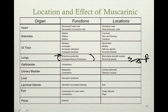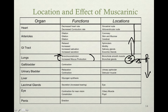Giving Atrovent — a parasympatholytic or anticholinergic — blocks parasympathetic tone and leaves sympathetic dominance. In addition, giving a beta-2 agonist, which targets a sympathetic receptor, gives even more benefit — more bang for your buck in treating bronchospasm.